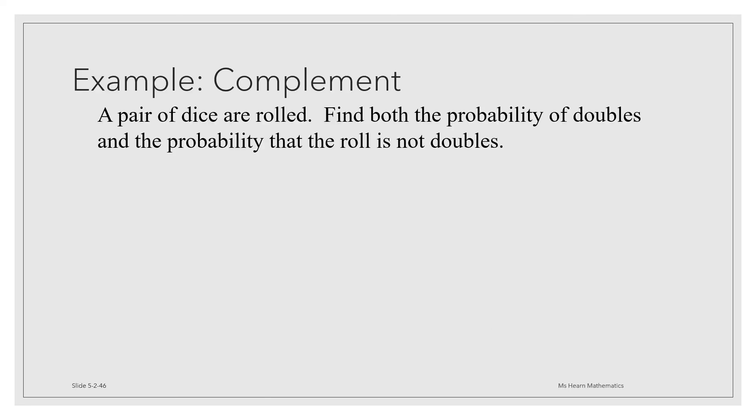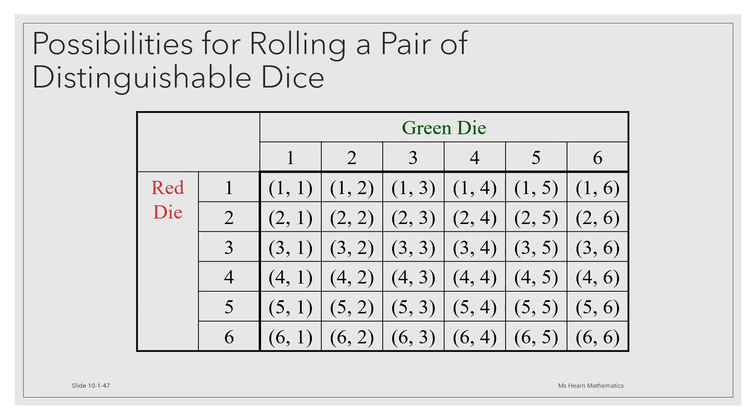Here's another example. A pair of dice are rolled. Find both the probability of doubles and the probability that the roll is not doubles. Whenever you're asked to answer a question about probabilities involving rolling a pair of dice, it's a good idea to look at the product table for a pair of dice to see all the different possibilities. We're interested in the probability of doubles.